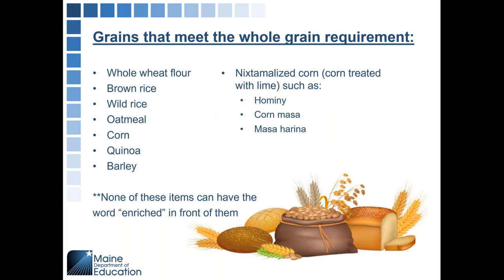Grains that meet the whole grain requirement include whole wheat flour, brown rice, wild rice, oatmeal, corn, quinoa, barley, and nixtamalized corn — which is corn treated with lime, such as hominy, corn masa, or masa harina. None of these items can have the word 'enriched' in front of them; that is the key when looking for whole grains. There are some other qualifying whole grains, but if you come across one you want to use, email us or check the Food Buying Guide to confirm it credits.